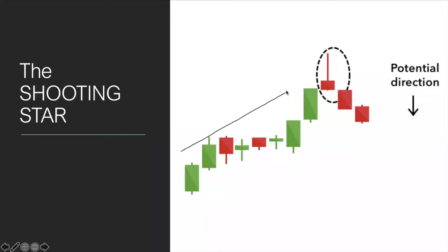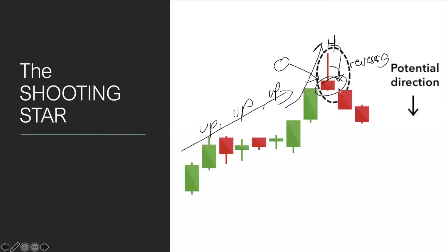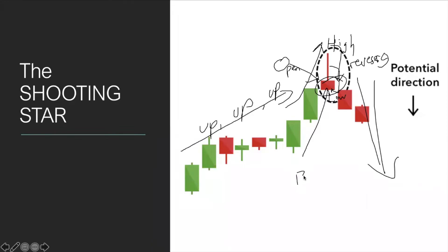The shooting star is the opposite of the hammer. Prices are climbing up strongly, but instead of continuing up, it reverses at the end of the session and closes down, forming a red candle. The price opens near the low, runs up to the high, then closes back near the low. This reversal pattern signals a potential move down because buyers are exhausted and sellers come in with full force.